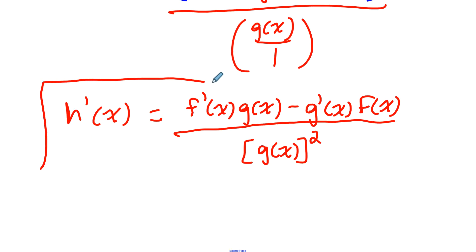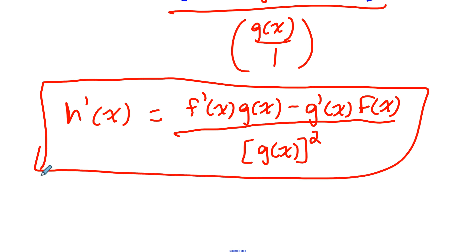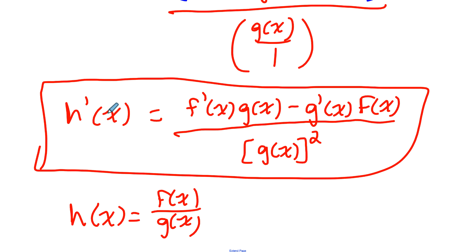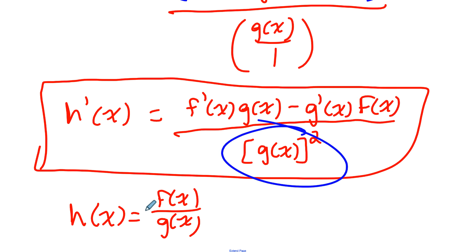This is the quotient rule for differentiation. If we have an original function h(x) = f(x)/g(x), I can differentiate h(x) by following this formula. If we call f(x) the top function and g(x) the bottom function, to find the derivative, we do the derivative of the top function times the bottom function, minus the derivative of the bottom function times the top function, all over the bottom function squared. And that's the quotient rule for differentiation.